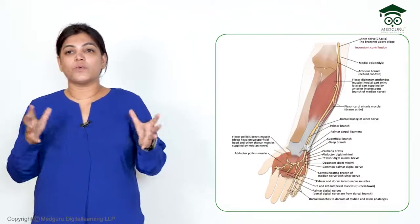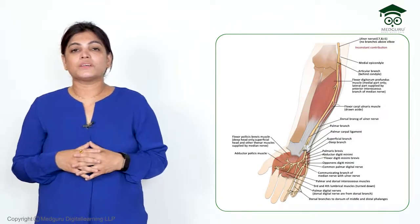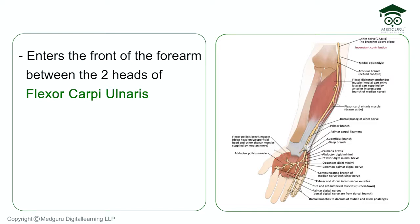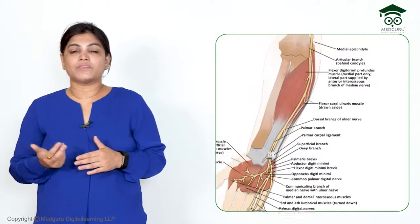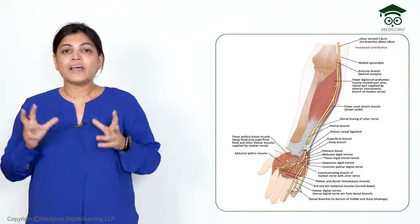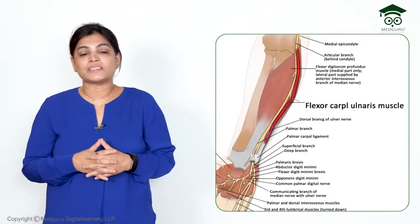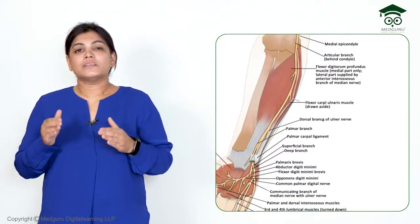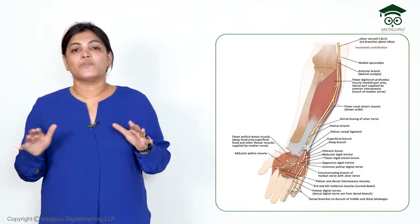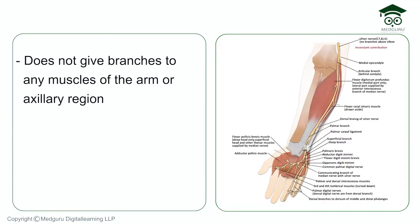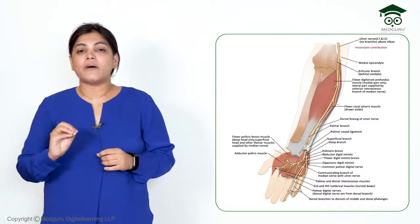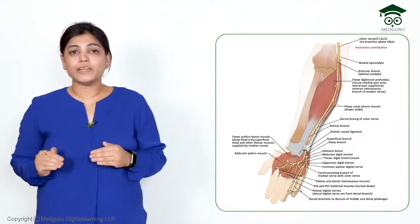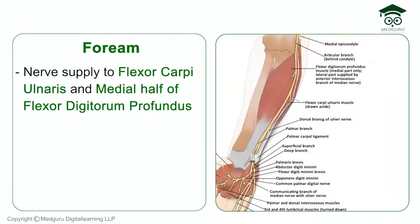The ulnar nerve then reaches the front of the forearm by passing between the two heads of flexor carpi ulnaris. Importantly, the ulnar nerve does not give any branch to muscles in the arm or axillary region. When it reaches the forearm, it supplies only two muscles: flexor carpi ulnaris and the medial half of flexor digitorum profundus.